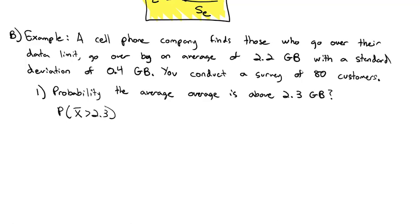Well, the first thing we're going to need to do here is we're going to figure out what is the distribution of the mean. The mean should have the same mean as the population, 2.2 gigabytes. But the standard deviation is smaller. We take the 0.4 gigabytes and we have to divide by the square root of the sample size. Divide by the square root of 80. So we have 2.2 comma 0.4 divided by the square root of 80 is about 0.045.